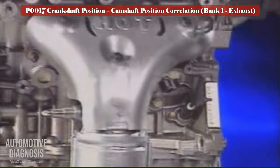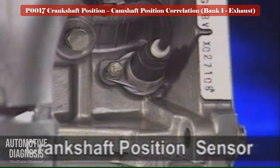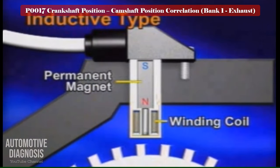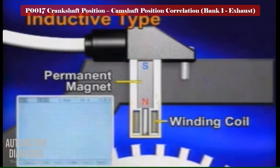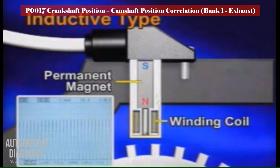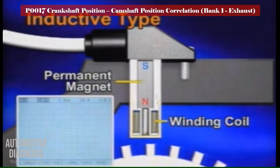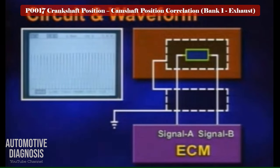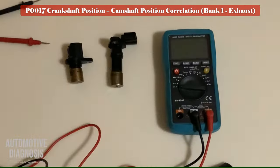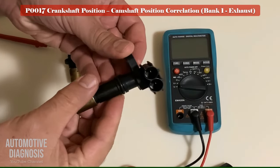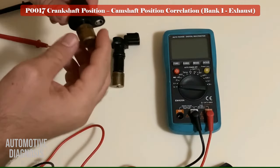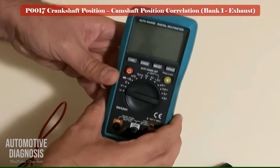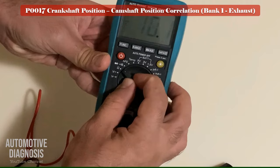Crankshaft position sensor testing procedure. The crankshaft position sensor detects the crankshaft position and sends the signal to the PCM. There are two types of these sensors: inductive type and Hall IC type. The inductive type consists of a permanent magnet and a winding coil. The magnetic flux field at the sensor responds as the teeth on the sensing ring rotate, and the sensor generates an AC voltage by rotation of the sensing teeth. For testing the inductive sensor, test the internal resistance with a multimeter and check it against the specification in the workshop manual. Replace the sensor if the resistance differs from the specification.